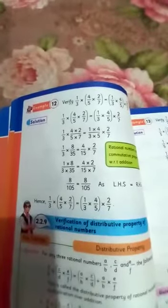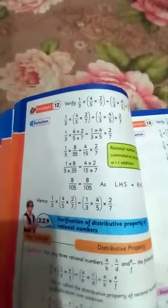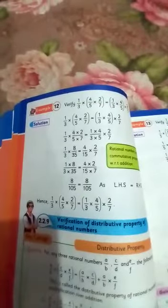Verification of distributive property of rational numbers. Today our topic is distributive property. If we have three rational numbers that are a by b, c by d, and e by f, and we have double order, that's why we will use the distributive property.